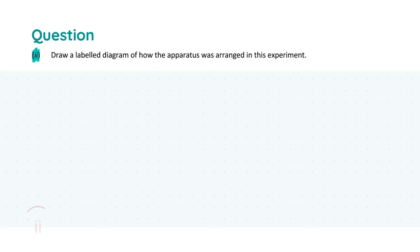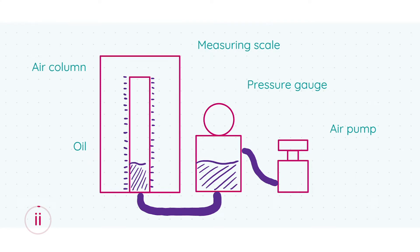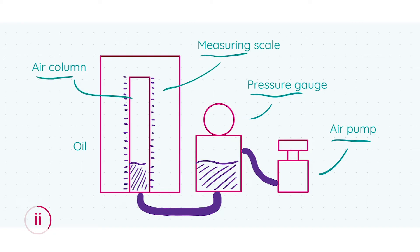Moving on to part ii, we're asked to draw a labelled diagram of how the apparatus was arranged for the Boyle's law experiment. There are a few key components to include. First, we have our air pump on the right-hand side, which is the means of changing pressure in the system. Next is the pressure gauge, shown in the middle, which is used to measure pressure. Finally, there's a means of measuring volume: the air column and the measuring scale beside it.